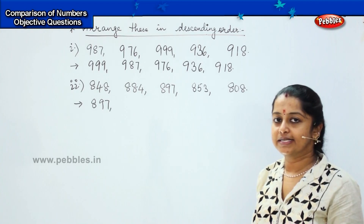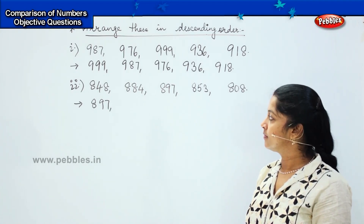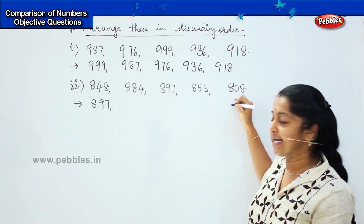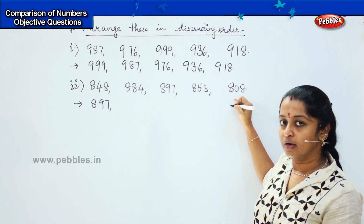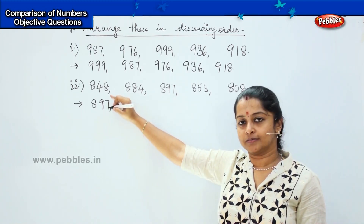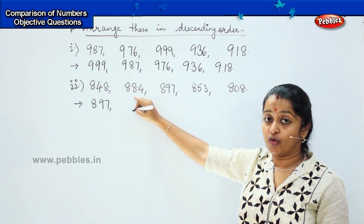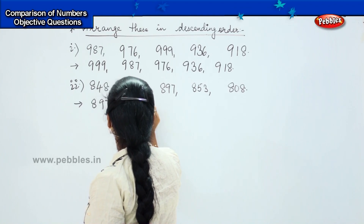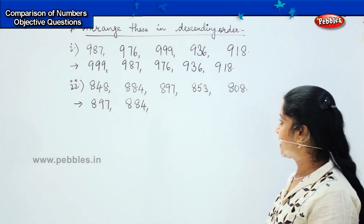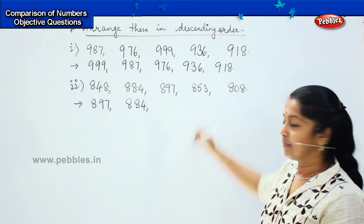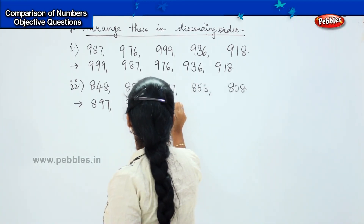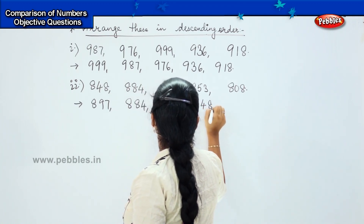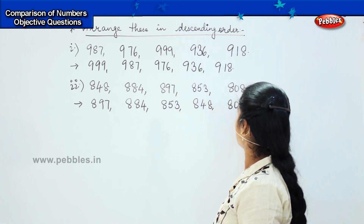What is the next number after 897? Is it 853? No. Is it 808? No. Is it 884? Yes. So my next number is 884. After that what will come? It is 853. So: 853, then comes 848, and last will be 808.